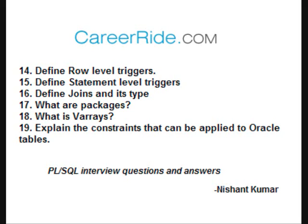Explain the constraints that can be applied to Oracle tables. Oracle constraints are used to maintain data integrity. The different types include: check constraint, NOT NULL constraint, primary key constraint, and unique constraint. Check constraint specifies a condition for a row. NOT NULL constraint specifies that a column cannot accept null values. Primary key constraint ensures that each row is identified by a unique key. Unique constraint ensures no column value has repetitive values.